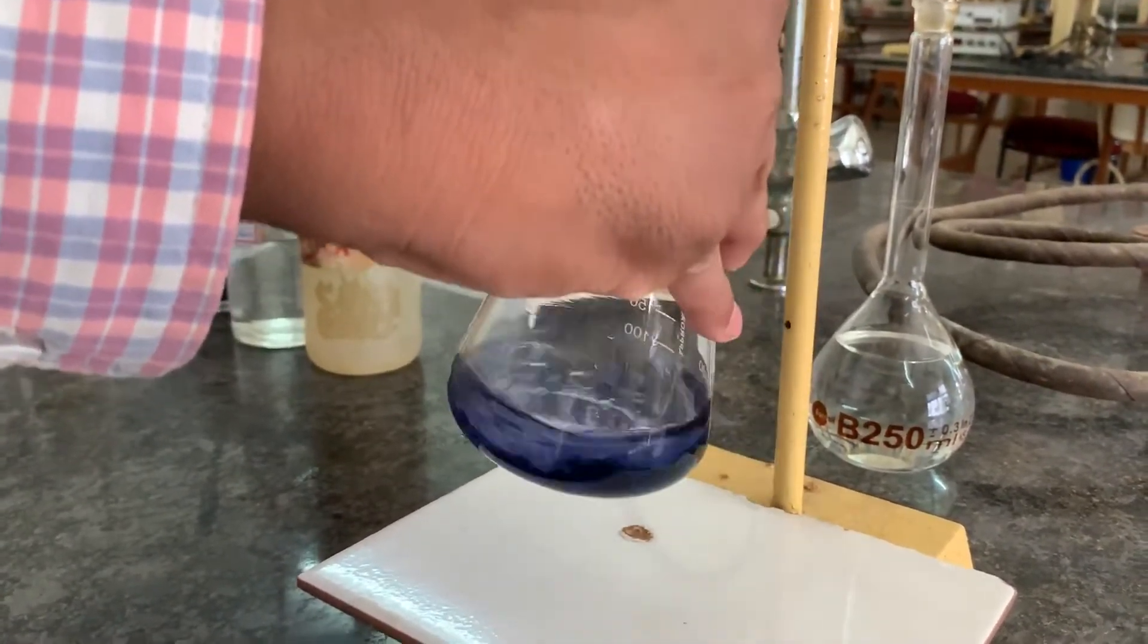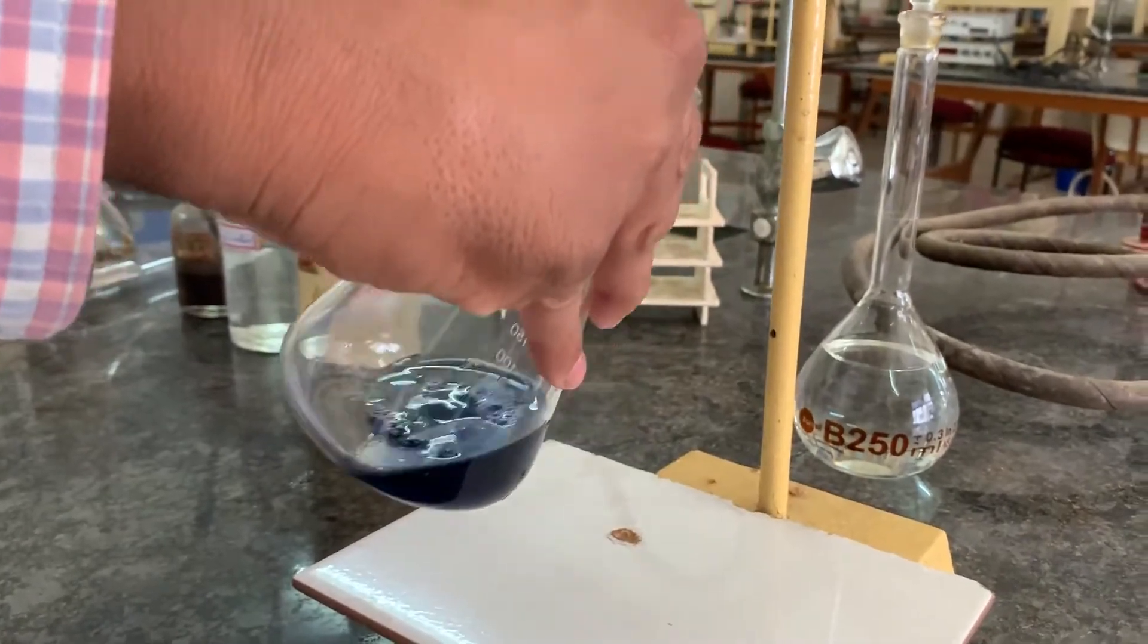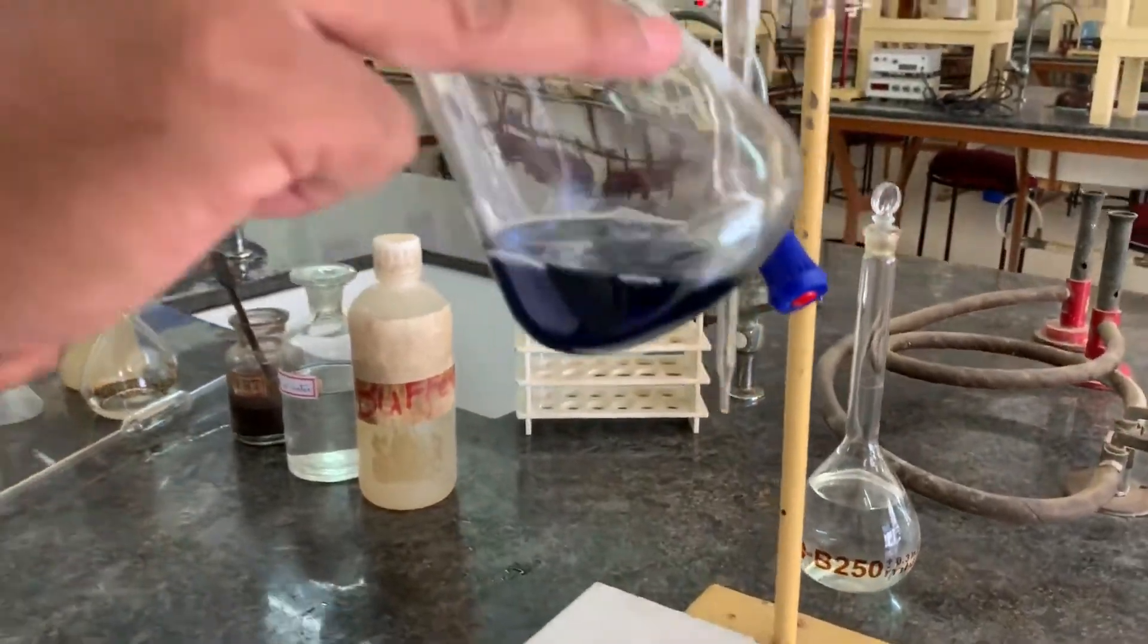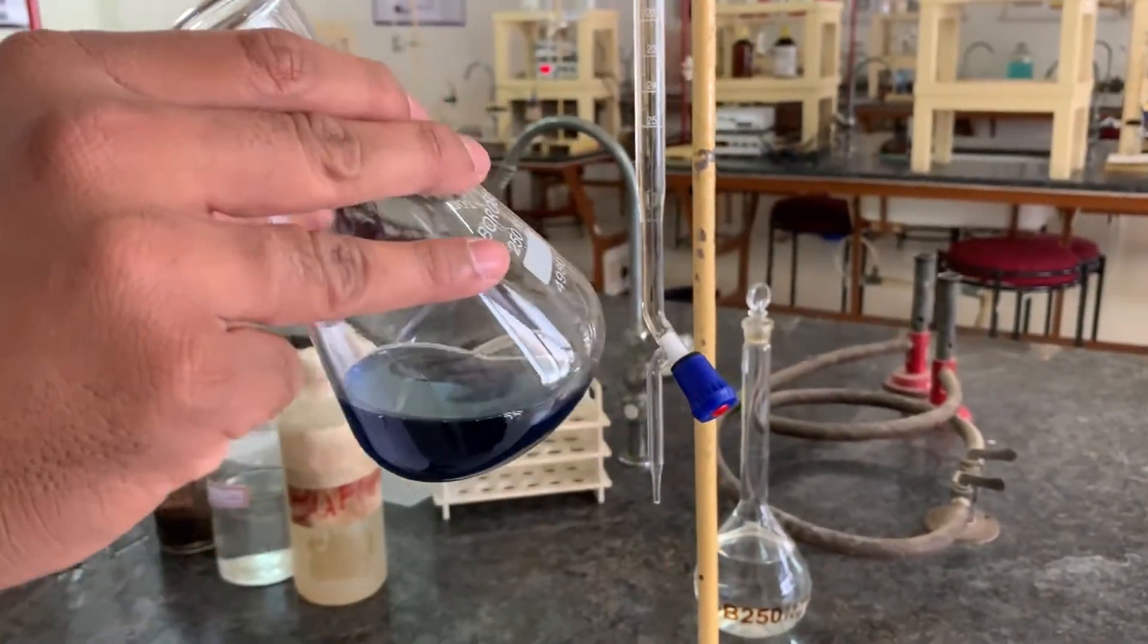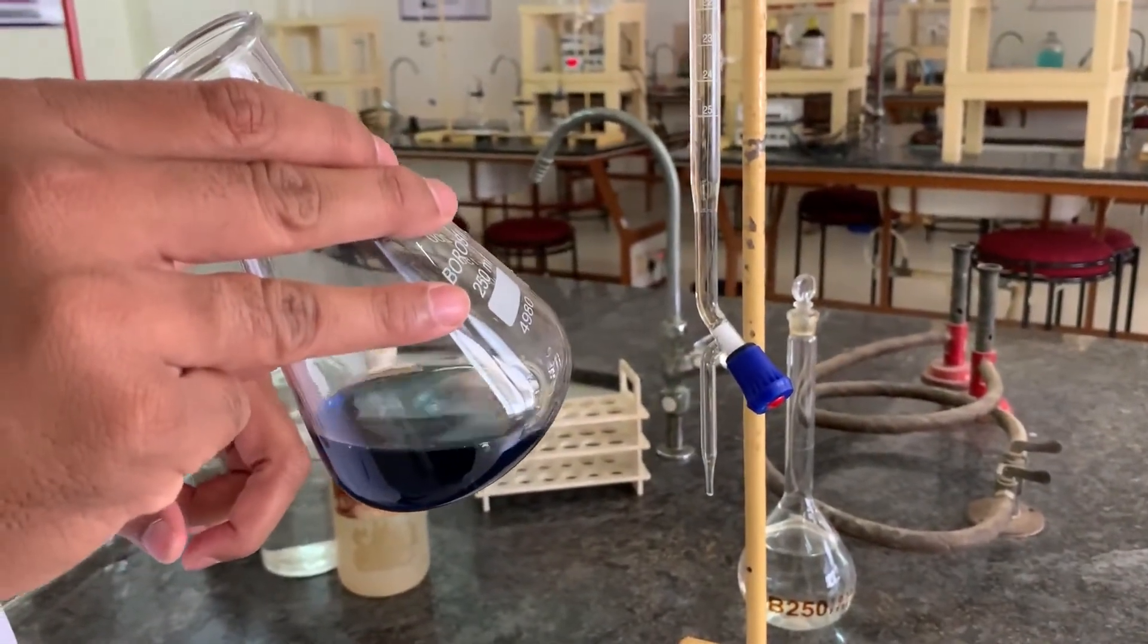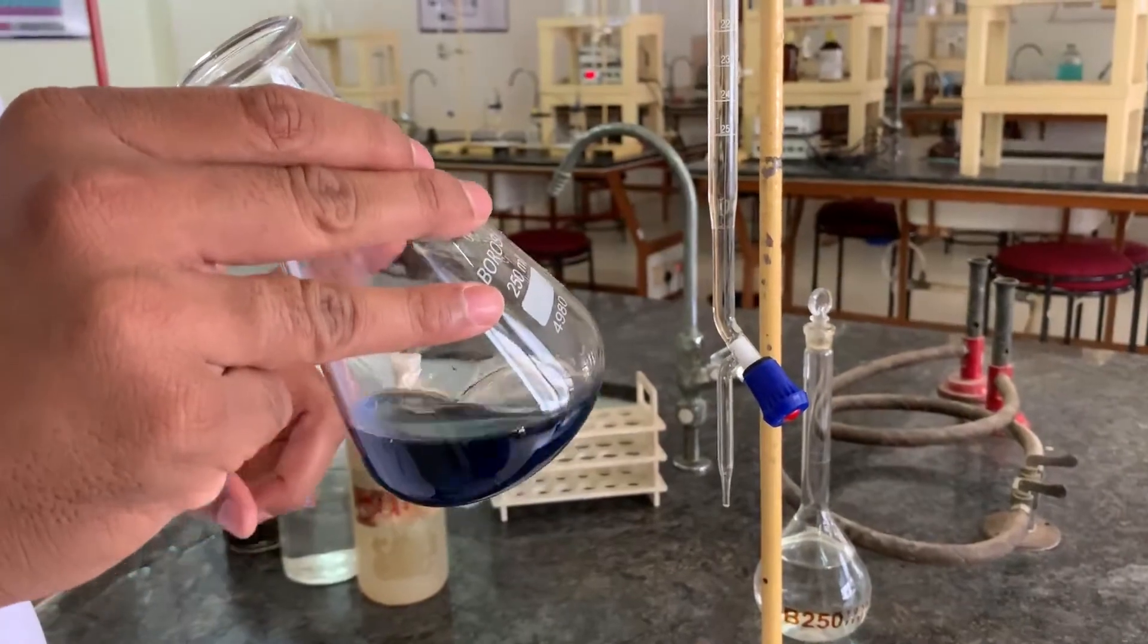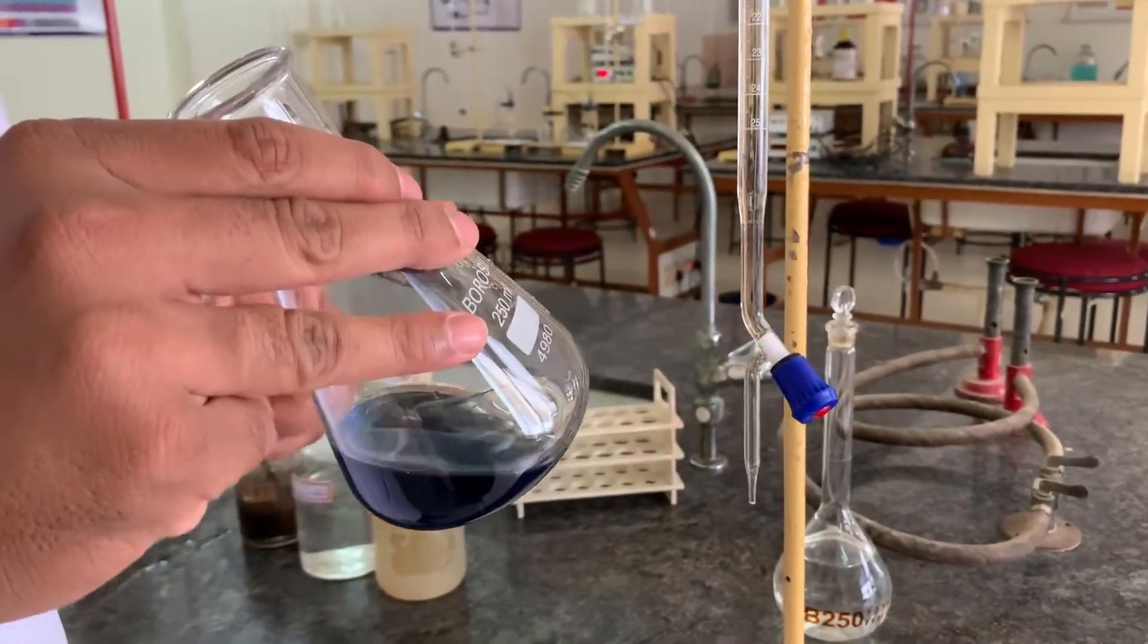You can observe that the color of the solution changed from wine red into clear blue color. This becomes the endpoint. Clear blue is coming because indicator has become free at the endpoint. Now, free indicator EBT is blue in color, that is why we are getting the endpoint from wine red to clear blue color.